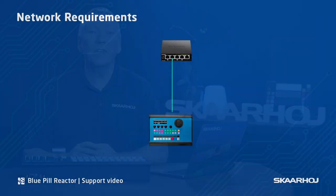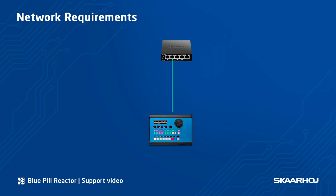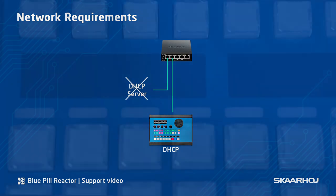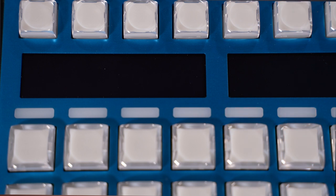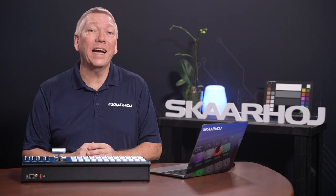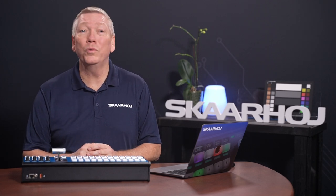Bluepill products are network based and leave the factory with IP set to DHCP. For this reason, we recommend you have a DHCP server for initial setup. Without a DHCP server, the device does not get an IP address and will display 'find me on none' on the display. In this case, we need to assign a static IP address to it instead.